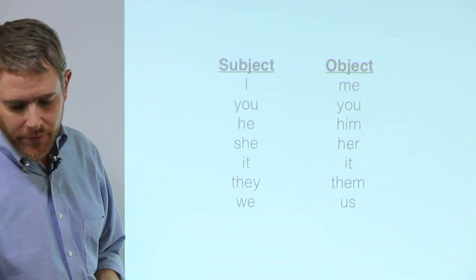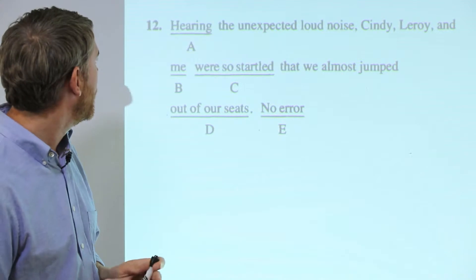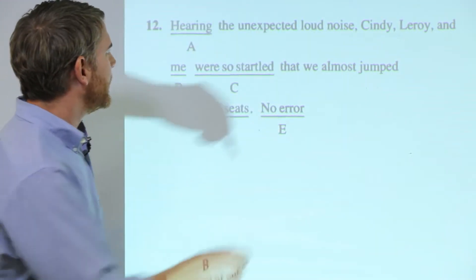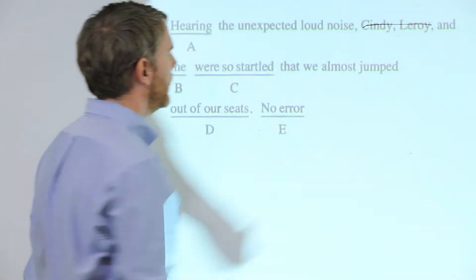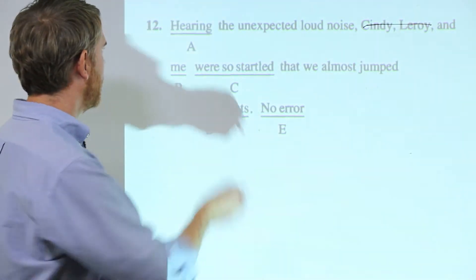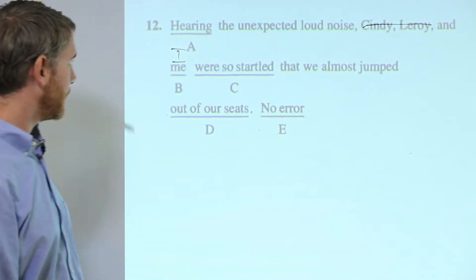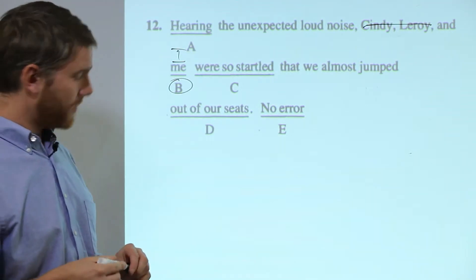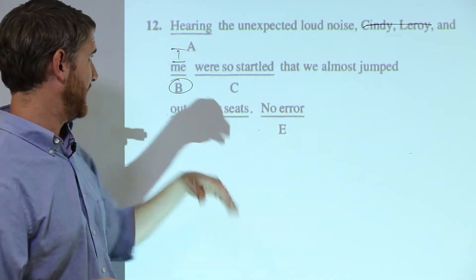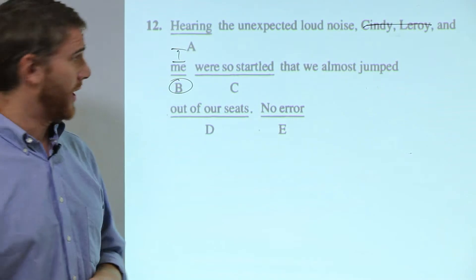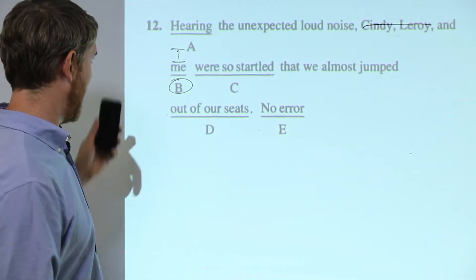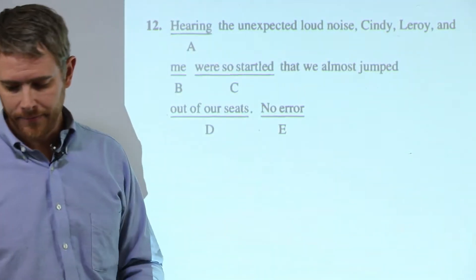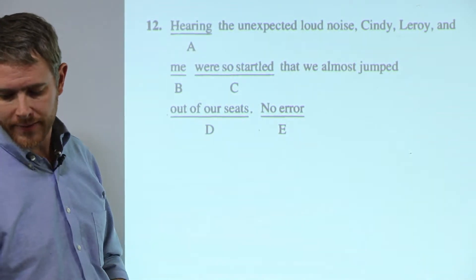Back to our first example: 'Hearing the unexpected loud noise, Cindy, Leroy, and me were so startled.' I cross out Cindy and Leroy, and I can see this should be 'I.' So my answer is B — by crossing out the other members of the plural subject, I can see that 'I' is the most appropriate pronoun to use, and I would change 'me' to 'I.'